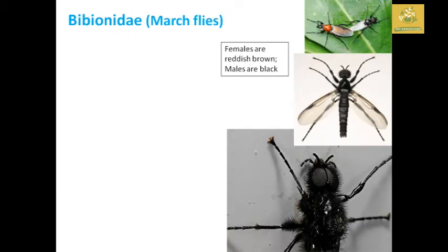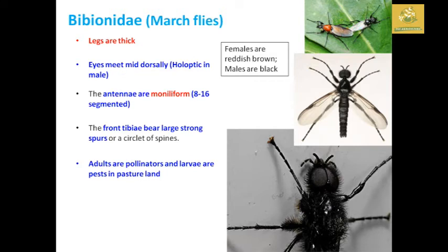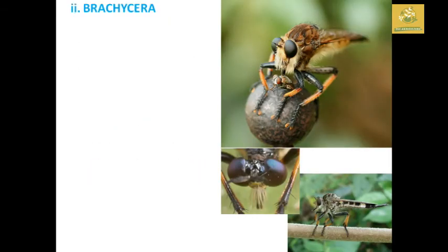Bibionidae comprises march flies. The legs are thick, and the eyes meet mid-dorsally, so they are holoptic in males. The antenna is moniliform, 8 to 16 segmented. The front tibia bears large strong spurs or circlets of spines. Adults are pollinators and larvae are found in pasture lands.